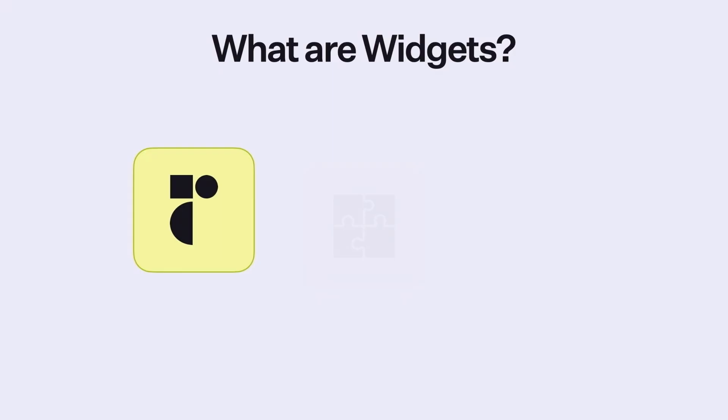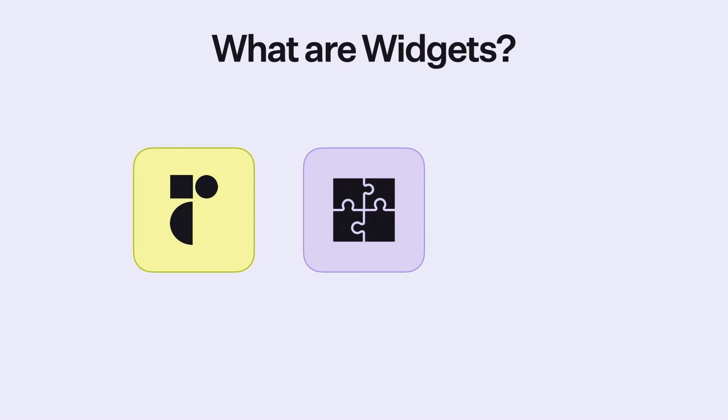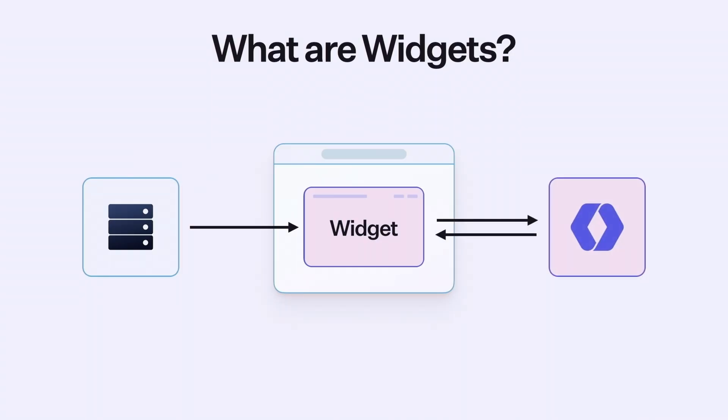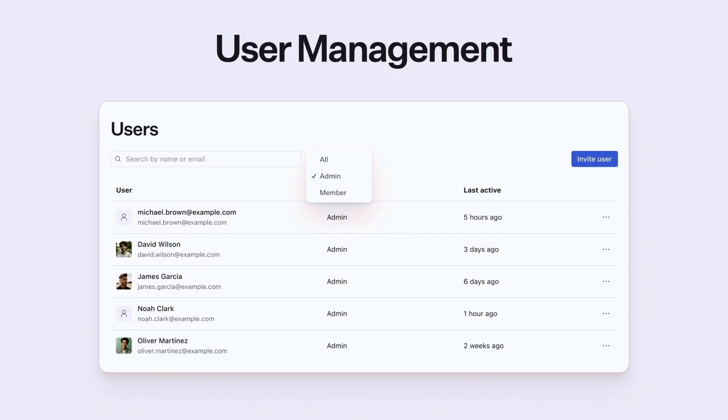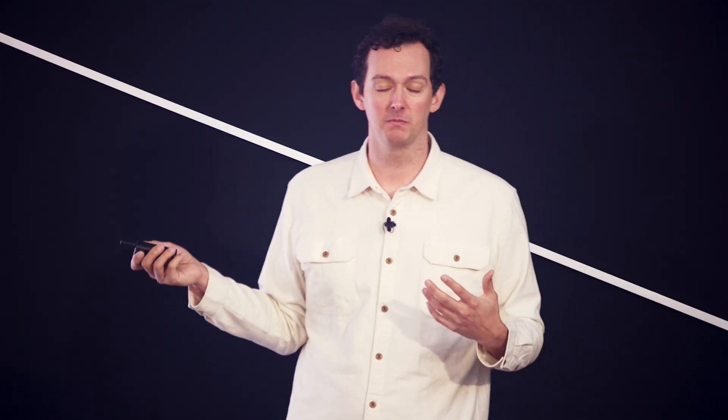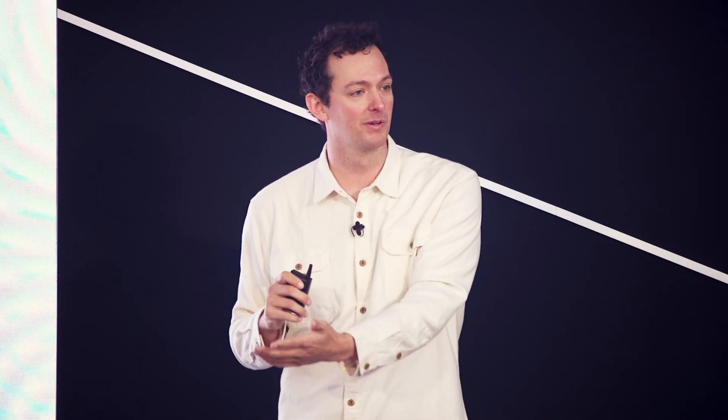WorkOS has been an API-first company since the very beginning, but sometimes you need the UI, and we're calling this widgets. Widgets are built on Radix, the most popular headless component system for React. Widgets are also the full product experience for a feature, and they interact directly with the WorkOS API — they are not iframes. The first widget we're launching is the user management widget, for your users to view which users are part of their organization. They can invite users, change attributes, change their role, deactivate them — they can do everything. If you've ever built one of these tables in your app, it's a huge pain. You will never have to build it again with widgets.